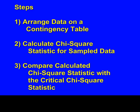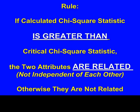Here are the steps. We're going to survey 10,000 website visitors for the number of items that they purchased and how long they stayed on the site. Then we're going to arrange that data on a contingency table, calculate the Chi-Square Statistic for that sample data, and compare the calculated Chi-Square Statistic with the critical Chi-Square Statistic. If the calculated Chi-Square Statistic is greater than the critical value, those two attributes are related — not independent. If it's less than, we would say those two attributes are independent of each other.